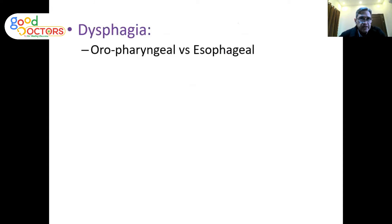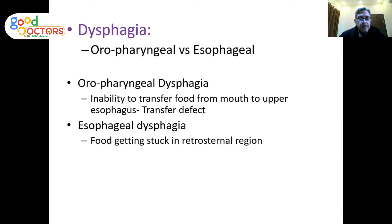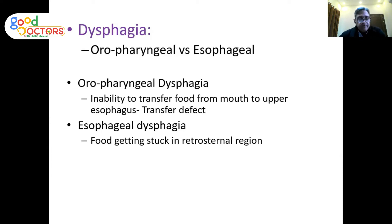First we must differentiate: is it oropharyngeal or esophageal? If it is oropharyngeal, the patient will have difficulty or inability to transfer food from mouth to the upper esophagus — this is essentially a transfer defect. If it is esophageal, the patient can pass food from mouth to the upper esophagus, but it gets stuck somewhere in the retrosternal region.